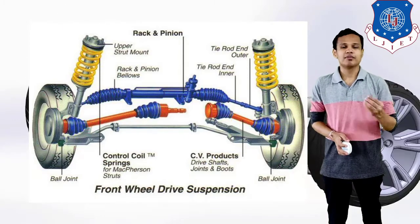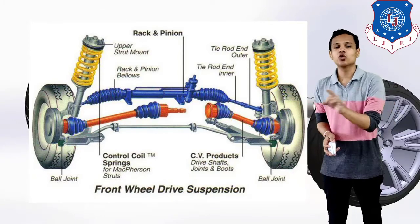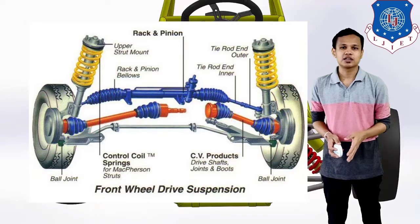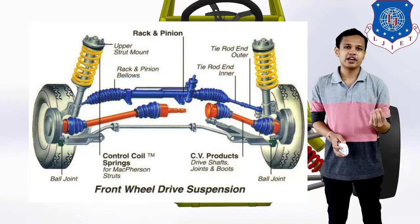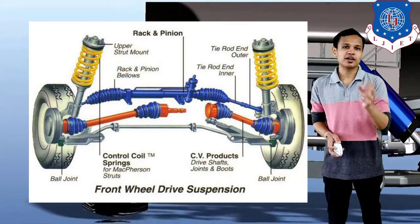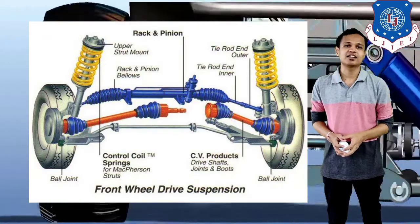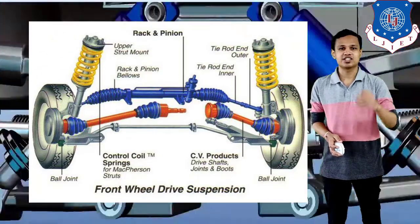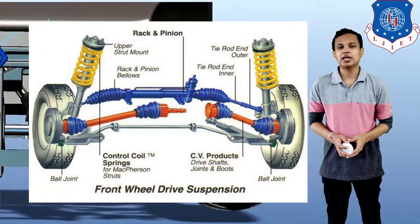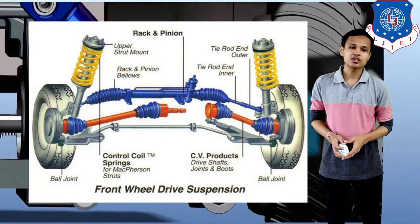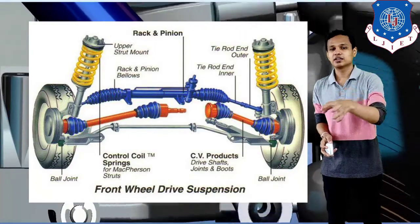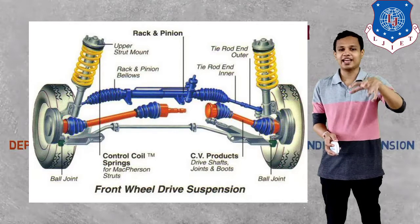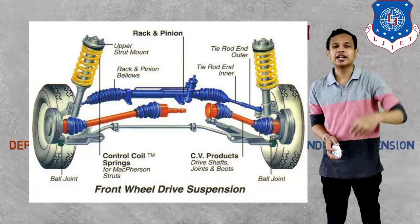The MacPherson strut has one lower arm on which the strut is arranged. On that strut, the absorber and spring assembly are arranged, and on top the upper mounting is arranged, which is connected with the frame of the vehicle. You can also see other components which are parts of the steering system, such as the rack and pinion system and tie rod end.